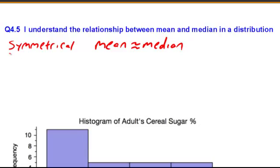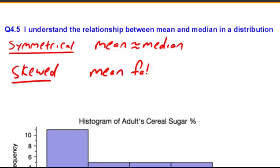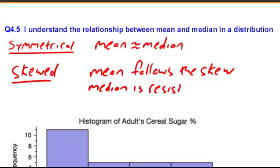In skewed distributions the mean follows the skew, and the median is resistant, meaning it kind of stays where it's at. It moves a little bit. So let's show some examples.